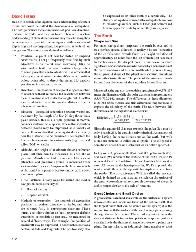Altitude is the height of an aircraft above a reference plane. Altitude can be measured as absolute or pressure. Absolute altitude is measured by a radar altimeter, and pressure altitude is measured from various datum planes. Compare with elevation, which is the height of a point or feature on the earth above a reference plane. Time is defined in many ways, but definitions used in navigation consist mainly of: 1) hour of the day, and 2) elapsed interval. The methods of expressing position, direction, distance, altitude, and time are covered fully in appropriate chapters.